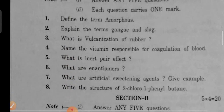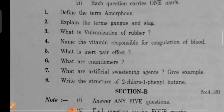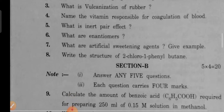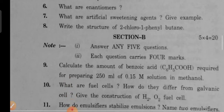Next, in the dual chemistry paper. Section A questions: Define the term amorphous. Explain the terms gangue and slag. What is the vulcanization of rubber? Name the vitamin responsible for coagulation of blood. What is the inert pair effect? What is an anti-markovnikov product? What are artificial sweetening agents? Give an example. Give the IUPAC name of 2-chloro-1-phenylbutane.